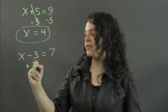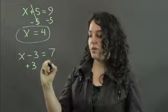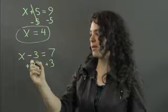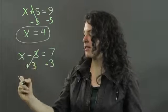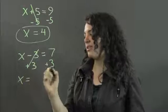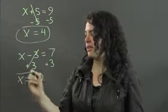We will add 3 again to both sides. Negative 3 plus 3 cancels out. We get x on this side. And 7 plus 3 is 10. x equals 10.